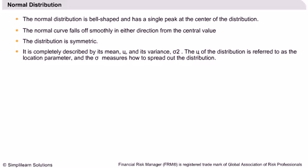It is completely described by its mean, mu, and its variance, sigma-squared. The mu, mean of the distribution, is referred to as the location parameter, and the sigma standard deviation measures how the distribution is spread out, known as scale parameter.